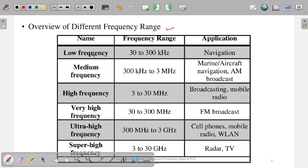One band is called low frequency, whose range is from 30 to 300 kilohertz. Remember, this is not gigahertz or megahertz — this is kilohertz. It is used in navigation, basically for sailors and ships that go into the sea. They use this frequency for navigation and contact.